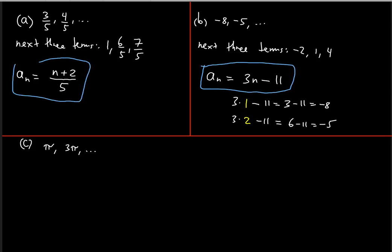So the nth term formula is 3n − 11. Finding the nth formula is usually tougher than finding the next three terms, especially for arithmetic sequences. You have to study the pattern — for any arithmetic sequence there is always a common difference that stays the same.